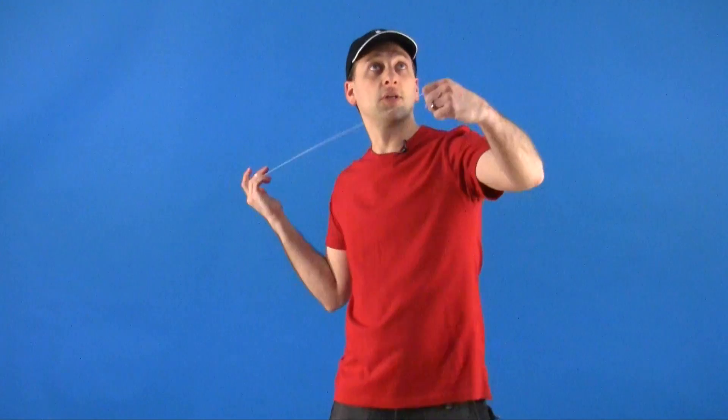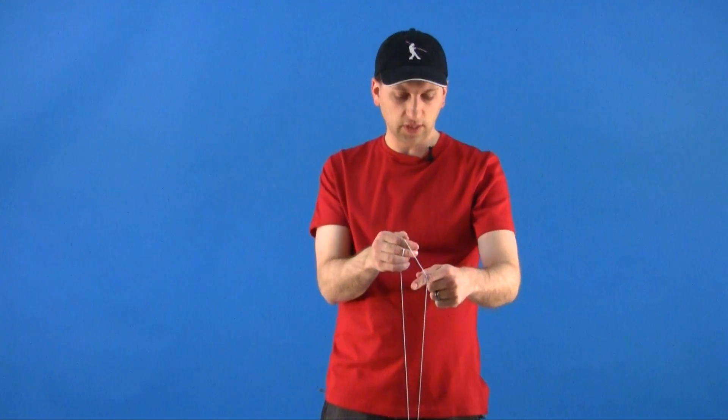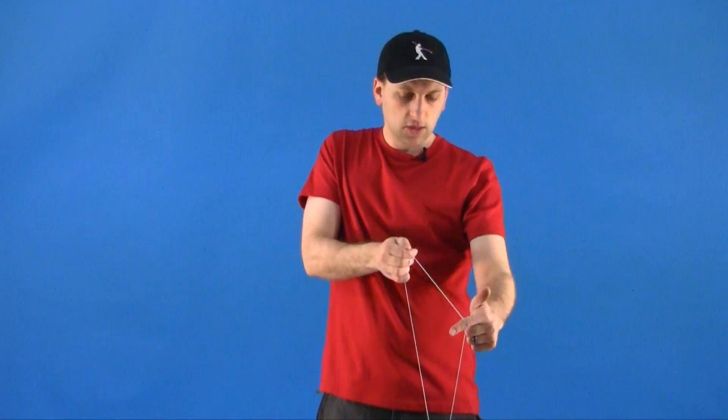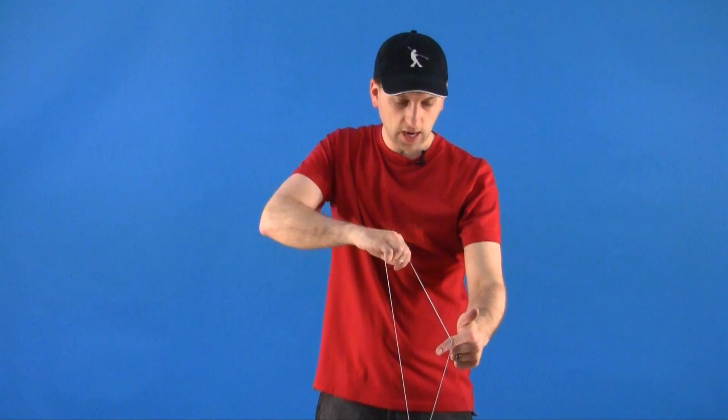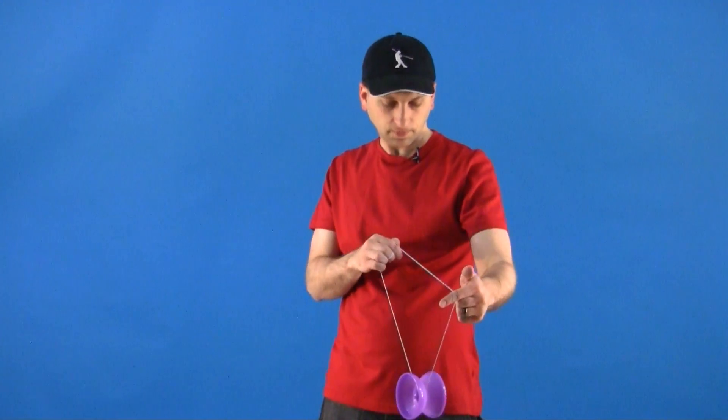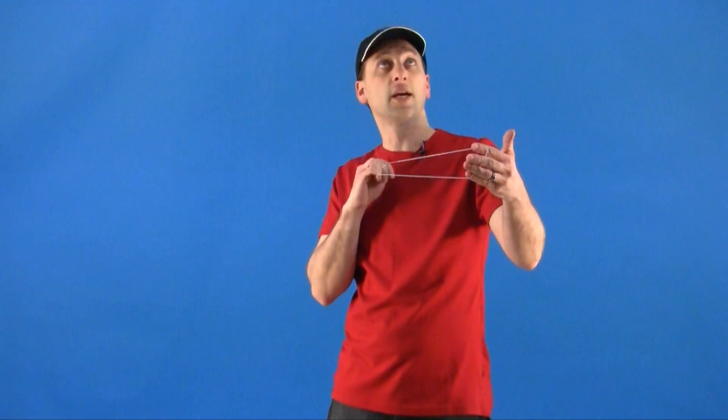If you want the yoyo to come outside of the string, you need to actually move the top string out of the way a little bit. There are two ways you can do it. One, you can actually take your yoyo hand and just twist it. When you do that, it moves the string out of the way so that your yoyo does not hit it on the way up.